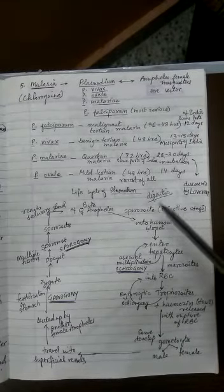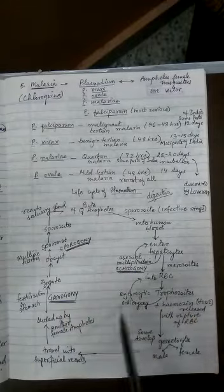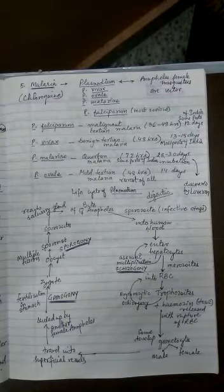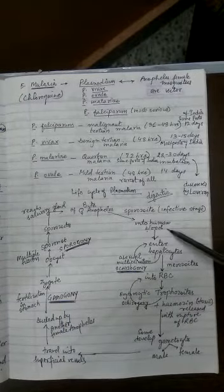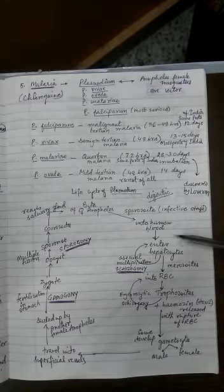Sporozoites are present in the salivary gland of the female Anopheles mosquito, and when she bites a person, she passes these sporozoites into the blood of the human being. So the parasite with the help of the bite through the blood reaches the liver.